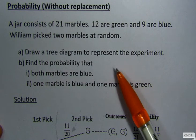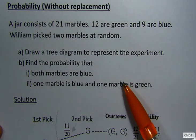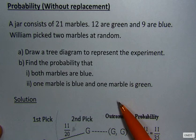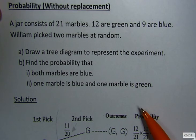First part says draw a tree diagram to represent the experiment and the second part says find the probability that both marbles are blue and one marble is blue and one marble is green. Let's look at the tree diagram.